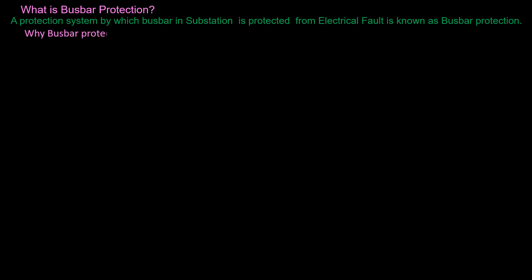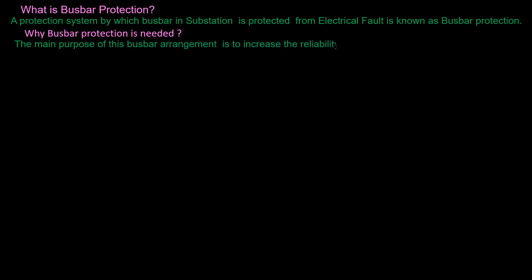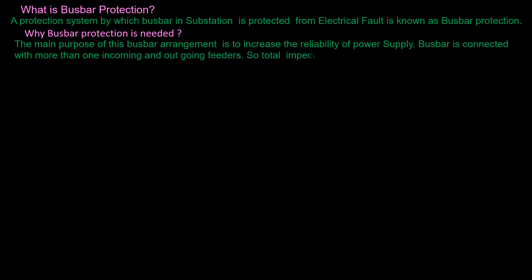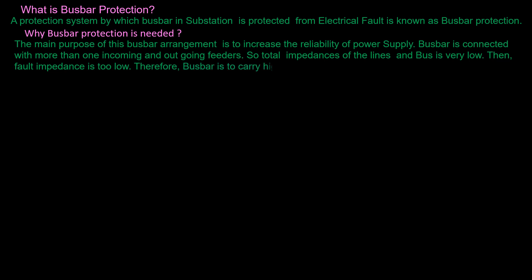Why is busbar protection needed? The main purpose of the busbar arrangement is to increase the reliability of power supply. Busbar is connected with more than one incoming and outgoing feeder. So the total impedance of the lines and the bus is very low, and therefore the fault impedance is too low. Hence the busbar has to carry high fault current during a fault, so protection of the busbar is needed.